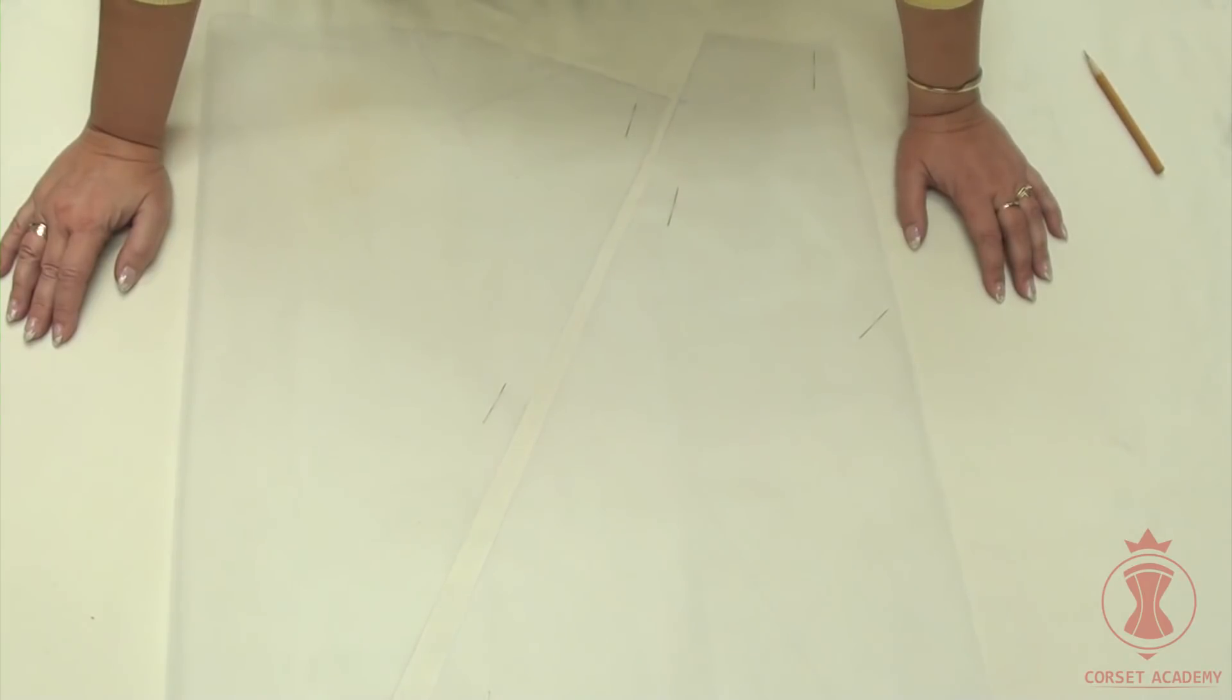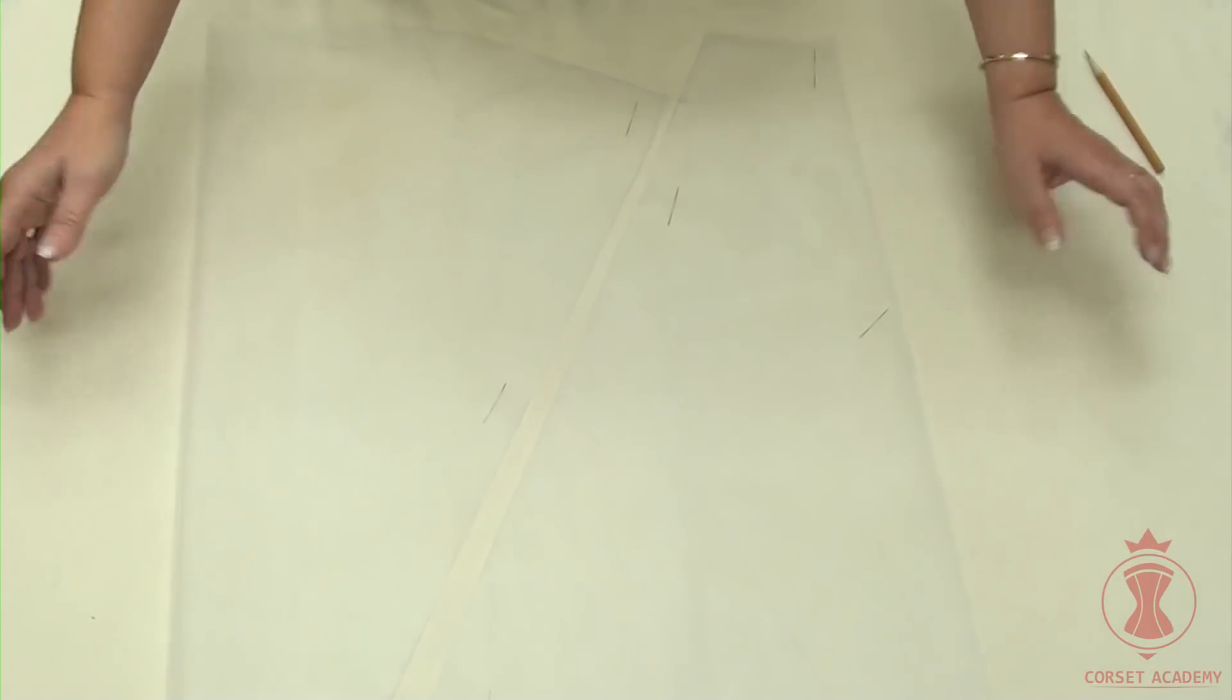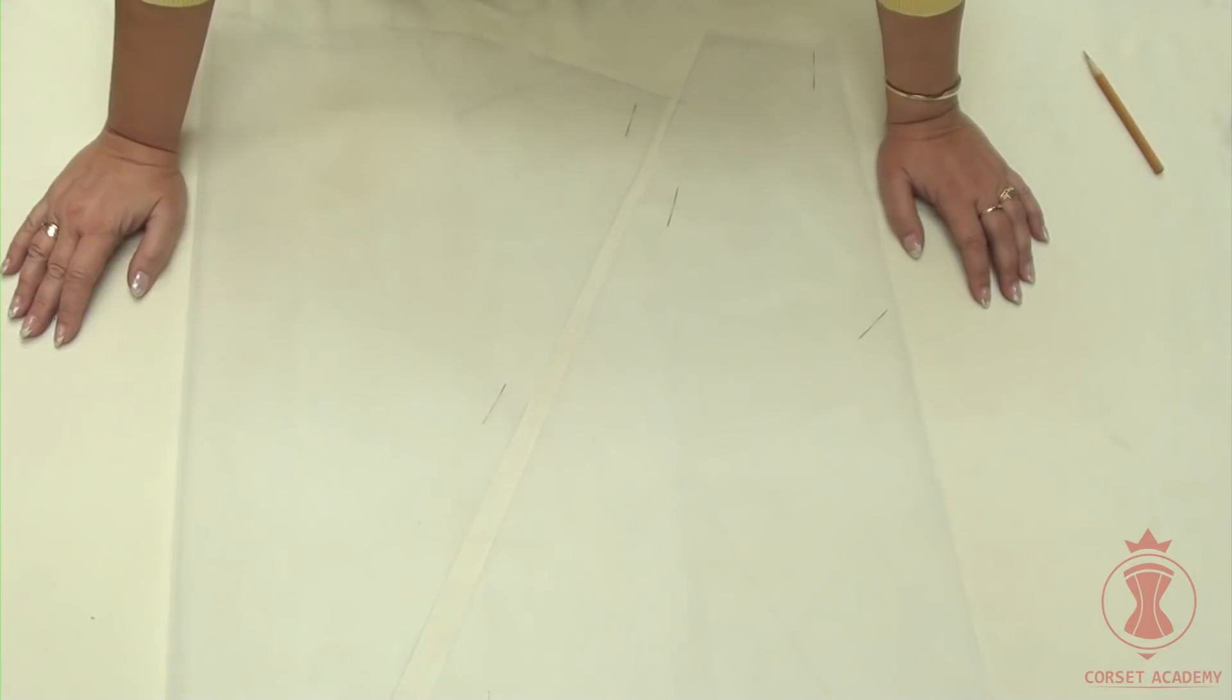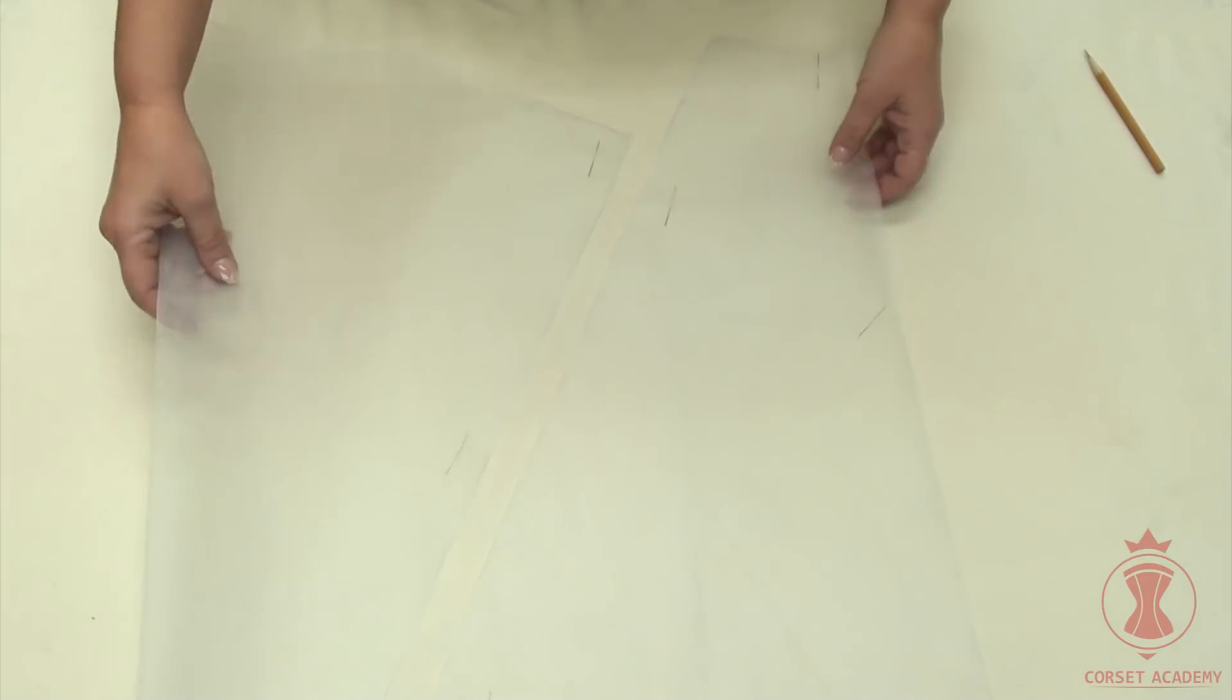It is quite obvious that no ready-made petticoat will be suitable for a half scale mock-up. I have to make one myself. You can follow the same steps to sew a full-size petticoat for the actual garment if you don't have a suitable ready-made petticoat at hand.